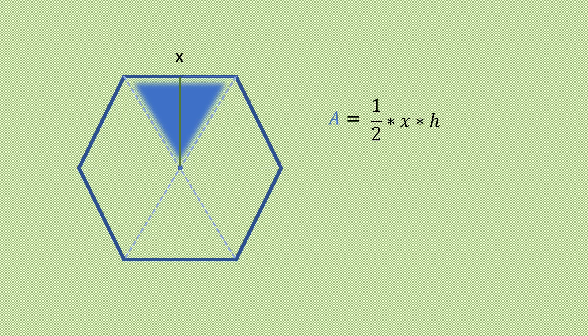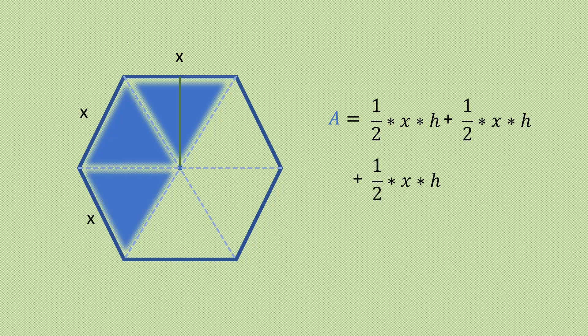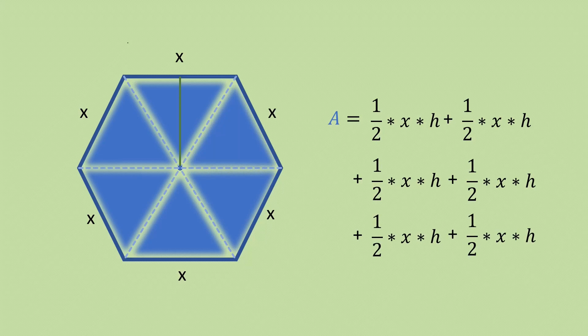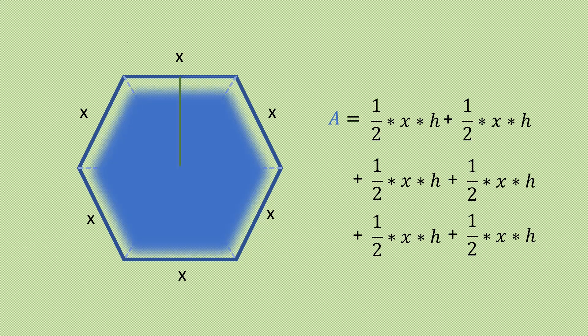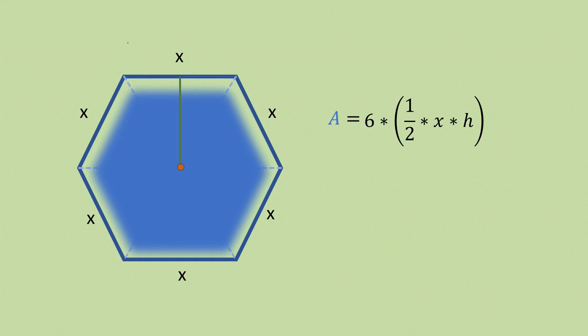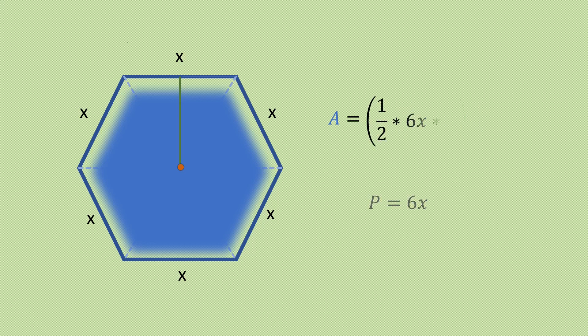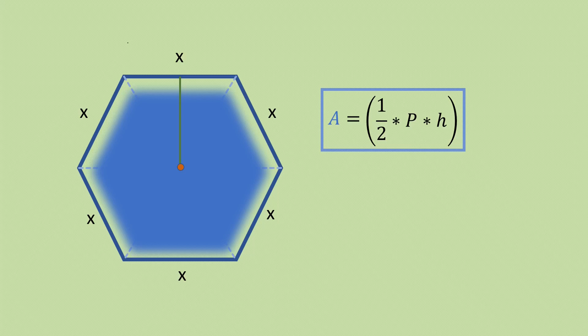If we draw the other diagonal, we can see five more congruent triangles. So the area of all those triangles is the same area times 6. We can bring the 6 with the x, and 6x will be equal to the perimeter of the regular polygon. Therefore, the area of this figure, or any regular polygon in general, is half the product of the perimeter and the height.